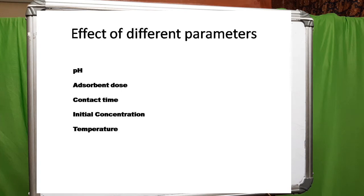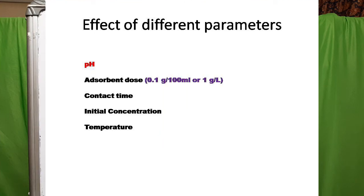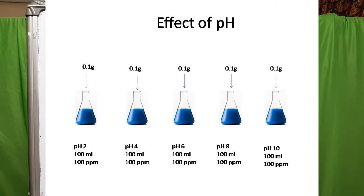First, we will study the effect of initial solution pH. When the pH of the solution is varied, the other parameters are kept constant. Here I am choosing: dose 0.1 g per 100 ml (1 g per litre), contact time 300 minutes, initial concentration 100 ppm, and temperature 25 degrees centigrade. We will prepare 5 solutions in 5 different conical flasks, each with a volume of 100 ml and concentration of 100 ppm, and add 0.1 g adsorbent to each conical.